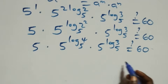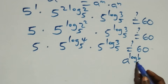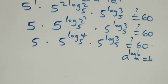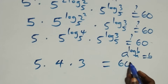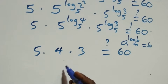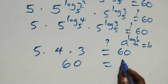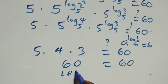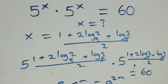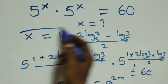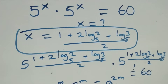Here we apply the rule a raised to power log_a(b) equals b. So this becomes 5 times 4 times 3, which equals 60. Five times four is twenty, and twenty times three is sixty, which equals sixty. Left-hand side equals right-hand side. Therefore we conclude that x equals (1 plus 2·log₅2 plus log₅3) over 2 satisfies the given problem. Thank you for watching — don't forget to subscribe for more videos, turn on the notification bell, share this video, give a thumbs up, and put your comment. See you next class, bye for now.